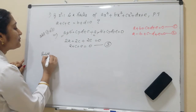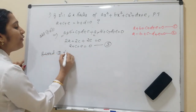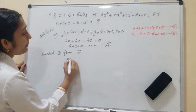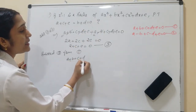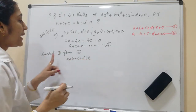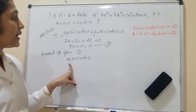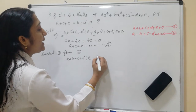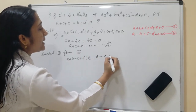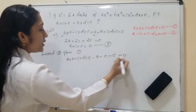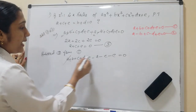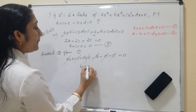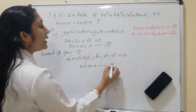Next, subtract Equation 3 from Equation 1: (a + b + c + d + e) - (a + c + e) = 0. Here a, c, and e all cancel, leaving b + d = 0, which is Equation 4.